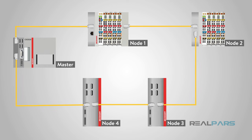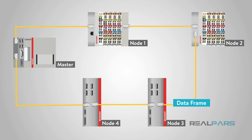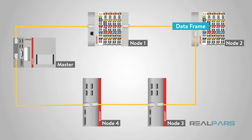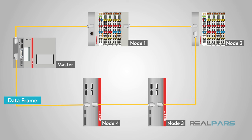With EtherCAT, the master sends data — possibly only a single frame for the entire node network — that will pass through each node. The master is the boss and is the only node allowed to send a frame. The frame is then forwarded downstream by each node in the network. This approach helps to assure real-time operation and avoids delays.